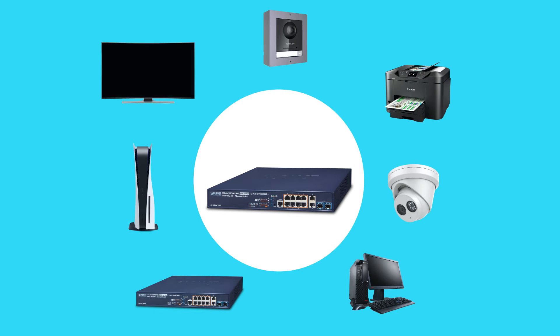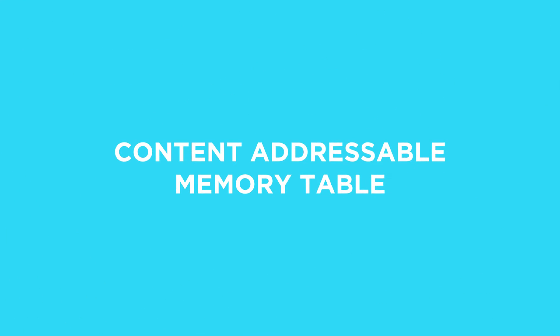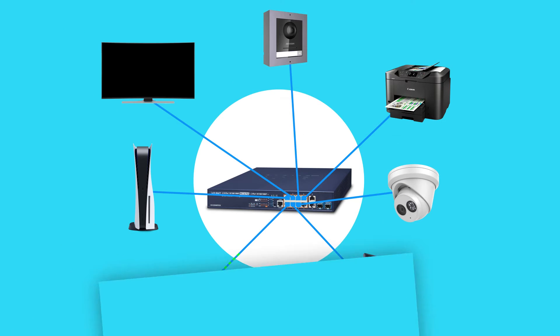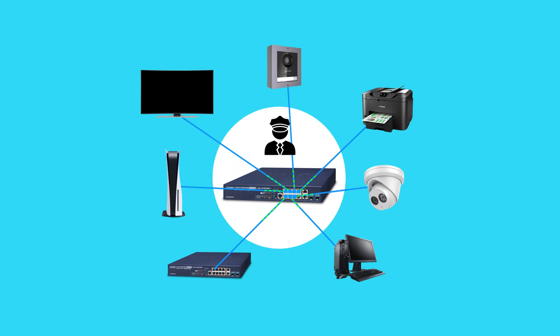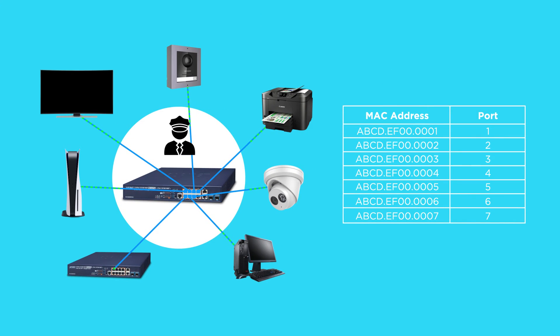Switches are able to communicate with these devices individually through a feature known as a content addressable memory table, or CAM for short. This table is also commonly known as a MAC table, and can be thought of like a traffic controller — its job is to direct data to a specific address on the network via the MAC address of the device. Basically, the MAC address is a unique identifier, similar to how mail can get delivered to your door, so the post guy knows where to deliver stuff.